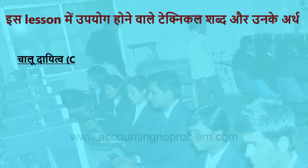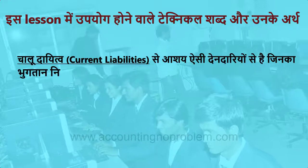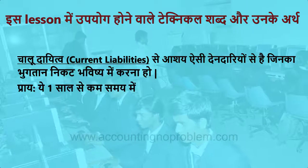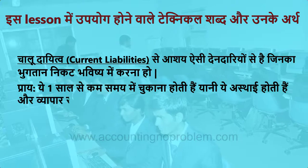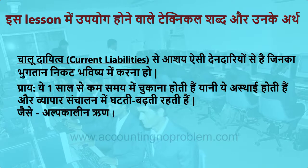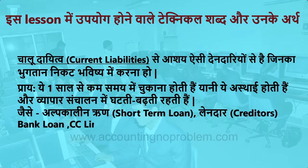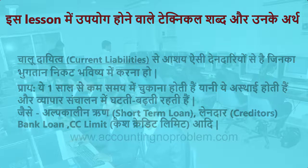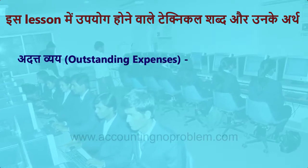चालू दायित्व यानि Current Liabilities से आशय ऐसी देनदारियों से है जिनका भुगतान निकट भविष्य में करना हो। प्रायः ये एक साल से कम समय में चुकानी होती हैं, यानि ये अस्थाई होती हैं और व्यापार संचालन में घटती-बढ़ती रहती हैं। जैसे अल्पकालिन ऋण यानि short term loan, लेंदार, bank loan, CC limit यानि Cash Credit limit आदि।